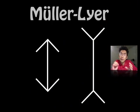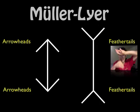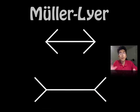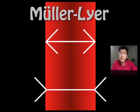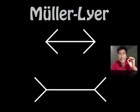The Muller-Lyer illusion asks you to think about which line is longer — the ones with the arrowheads or the ones with the feather tails. The illusion is based on the fact that the two inner lines are of equal length, but we perceive the one with the outward endings as being longer than the other, even though in reality they are exactly the same length.